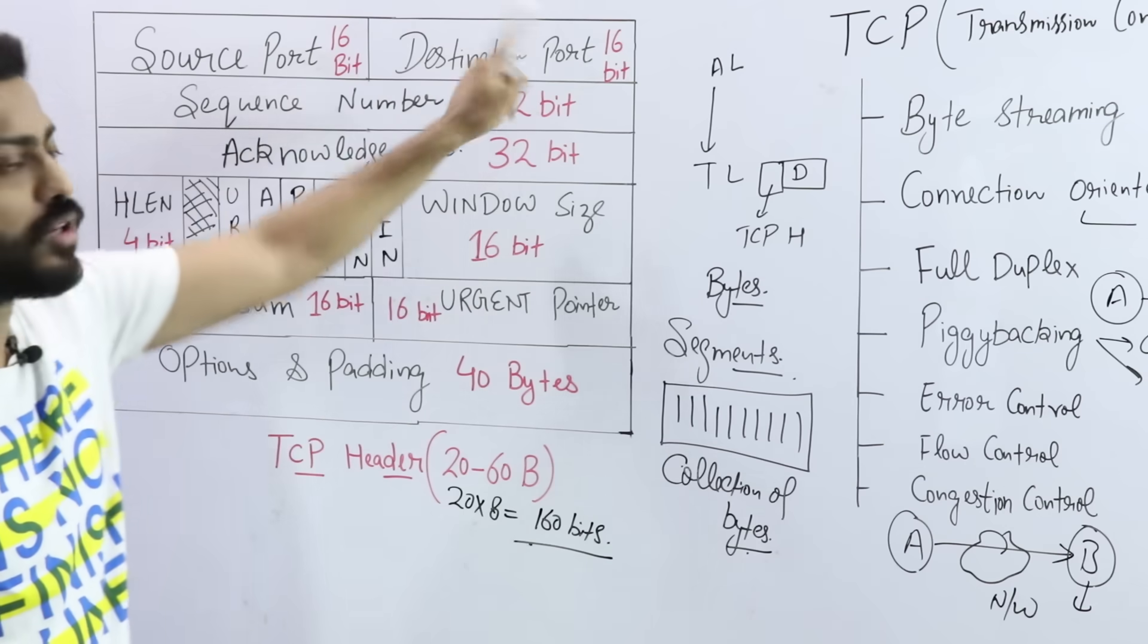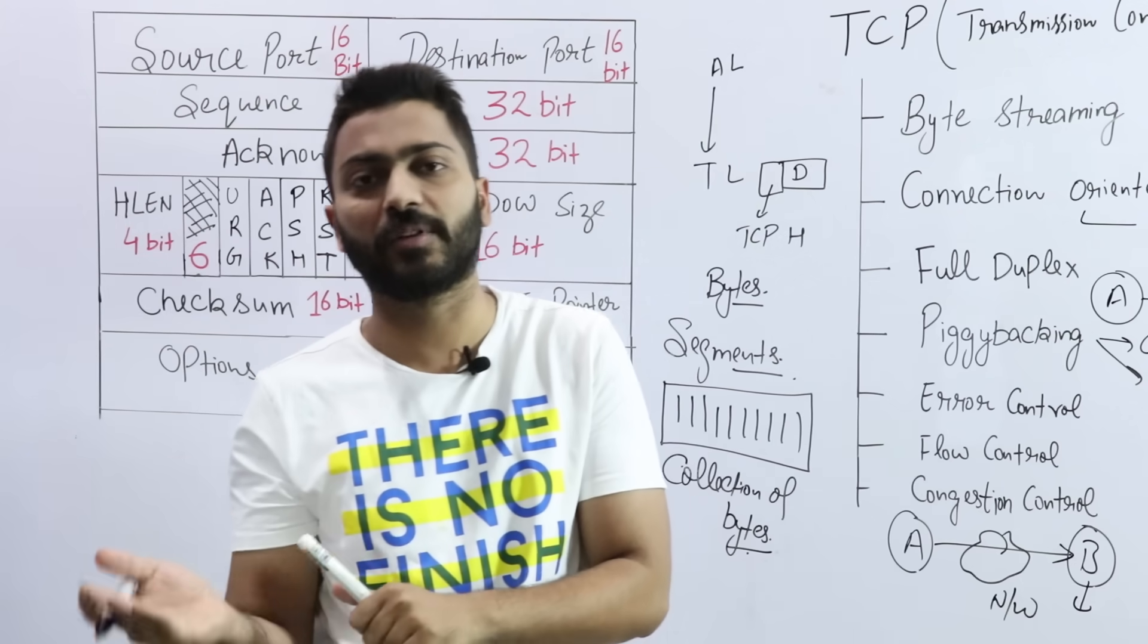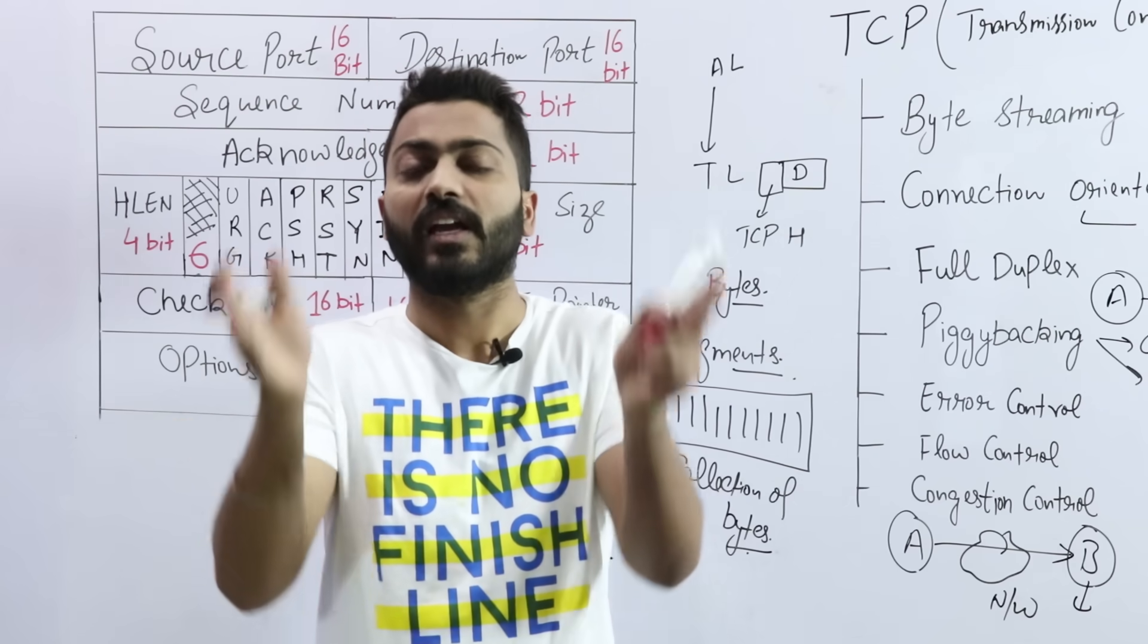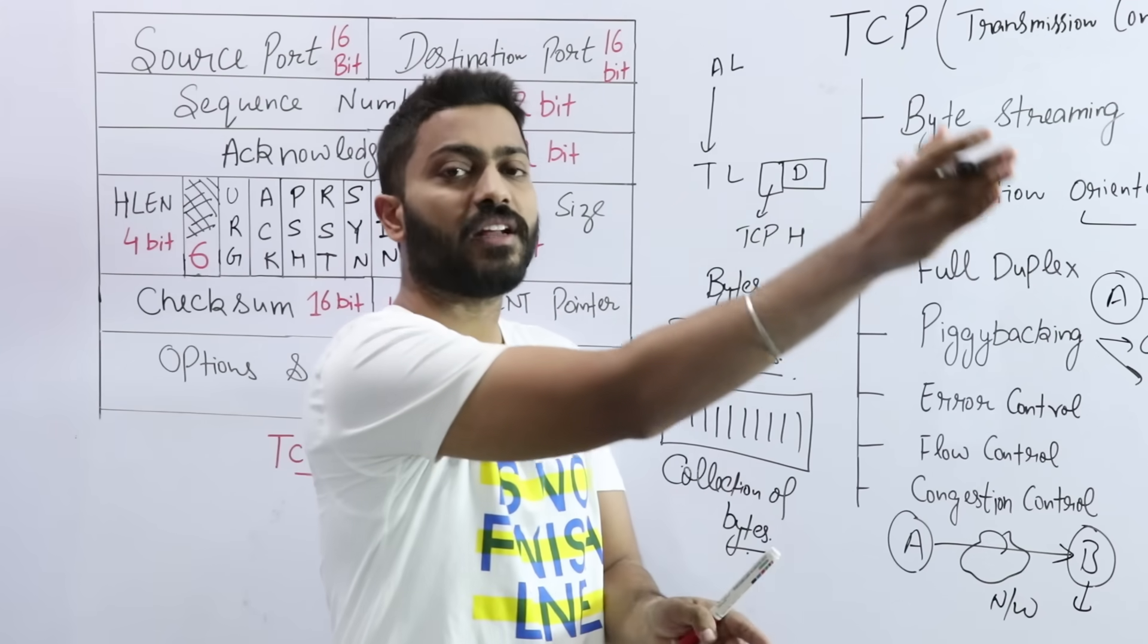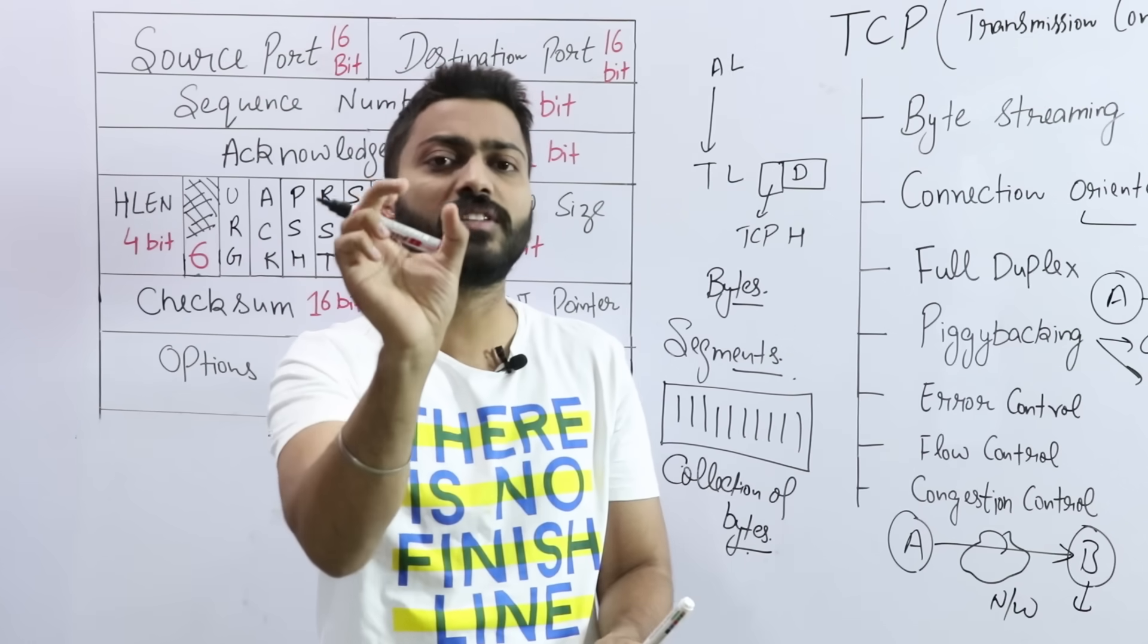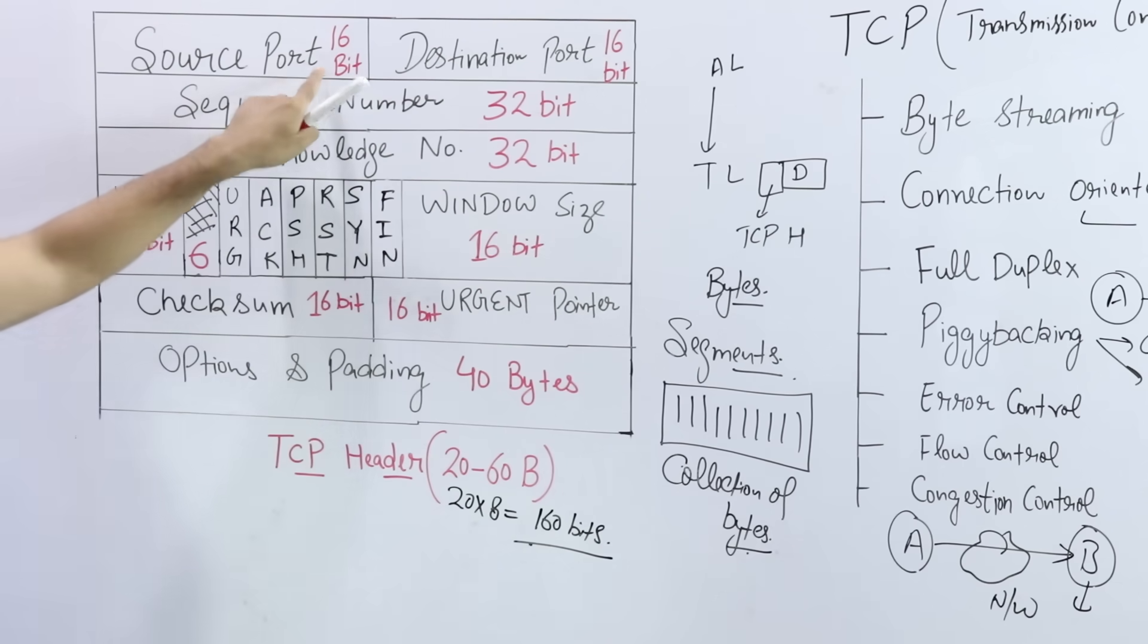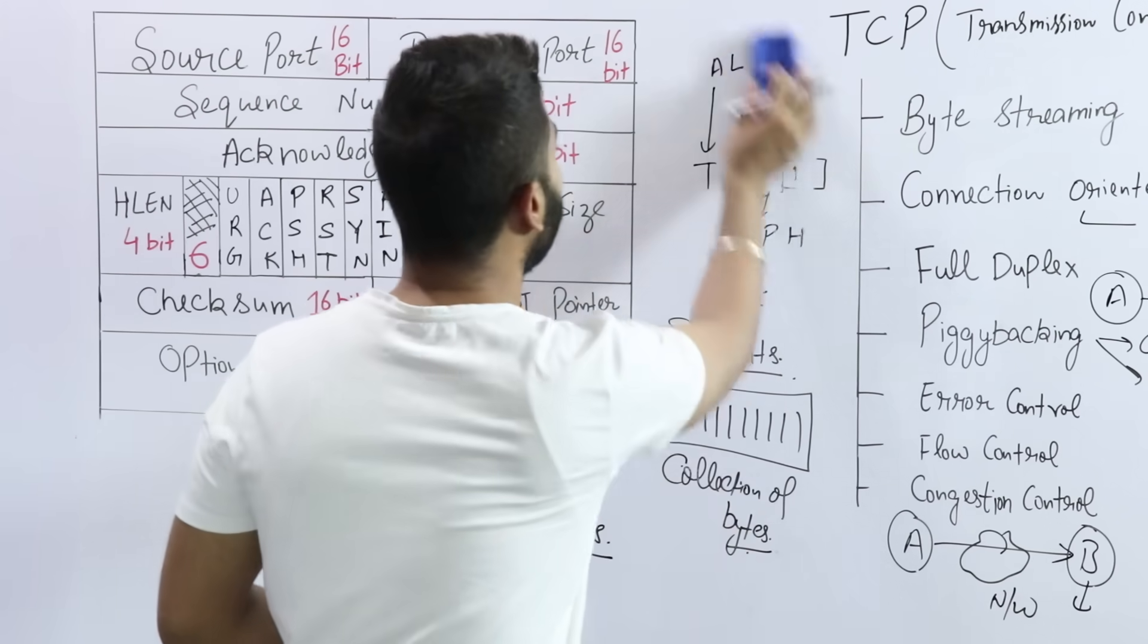First, let's talk about the first field, that is source port and destination port. Both are 16-bit. We talked about port number in transport layer in detail. When we talk about port, we are talking about end-to-end delivery. In my machine, many applications are running. Each application has its own port number. When we send data from that port, in receiver also many applications can run. So in receiver, which application, which port will accept that data? That is called end-to-end delivery.